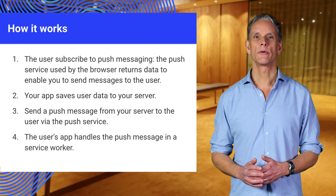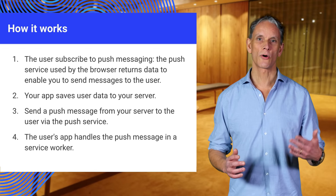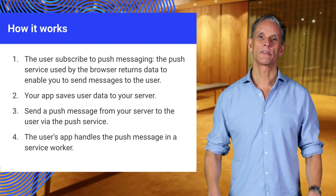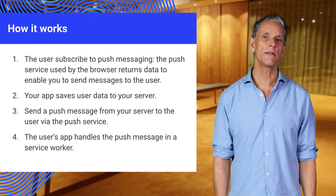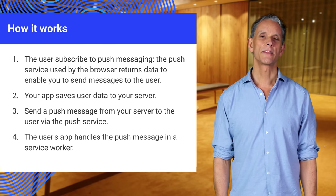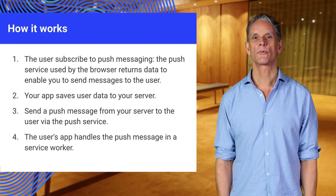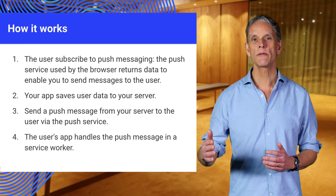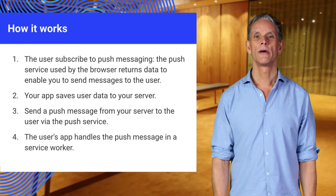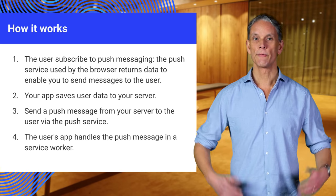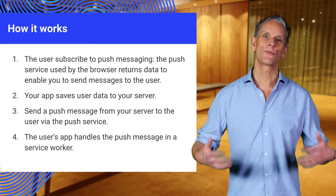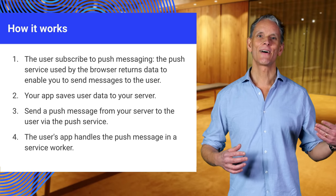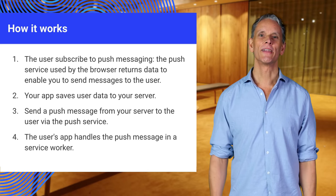Let's go through that step by step. In the app's main JavaScript, call pushManager.subscribe on the service worker registration object. Get the subscription object and convert it to JSON. Get the endpoint URL and public key, and save this to your server — for example by using a fetch request. Send the message payload from your server to the endpoint URL encrypted with the public key. The push message raises a push event in the service worker, which we handle in a push event handler to get the data from the message and display a notification.